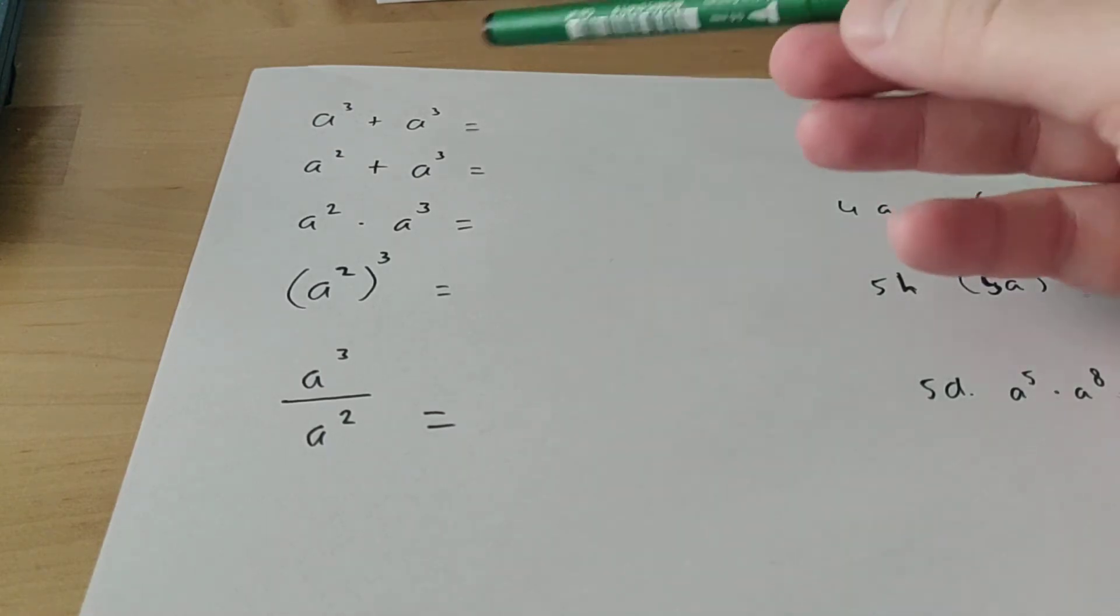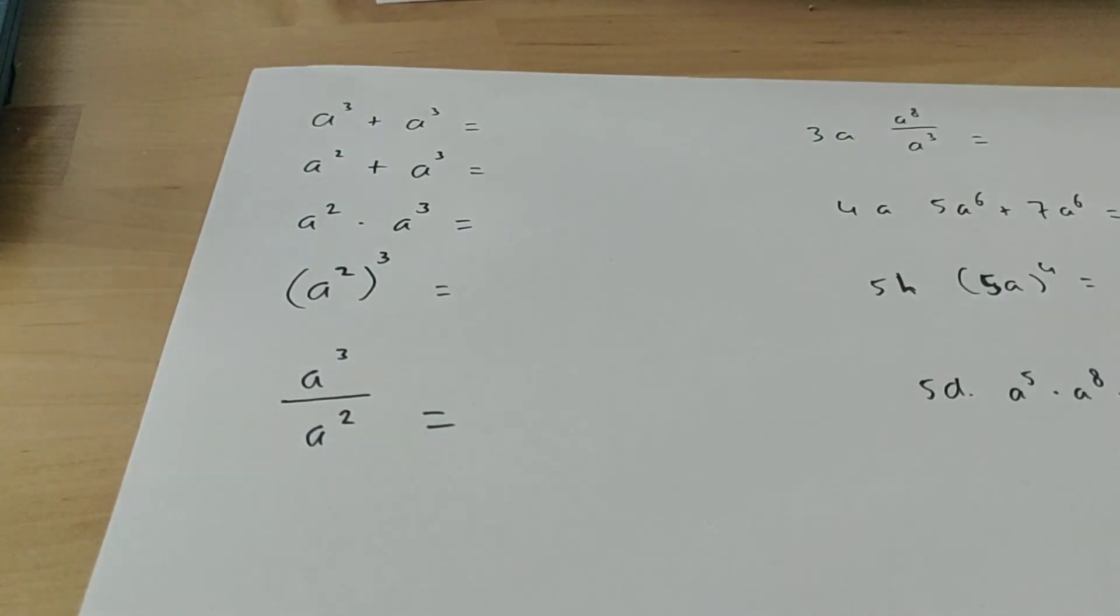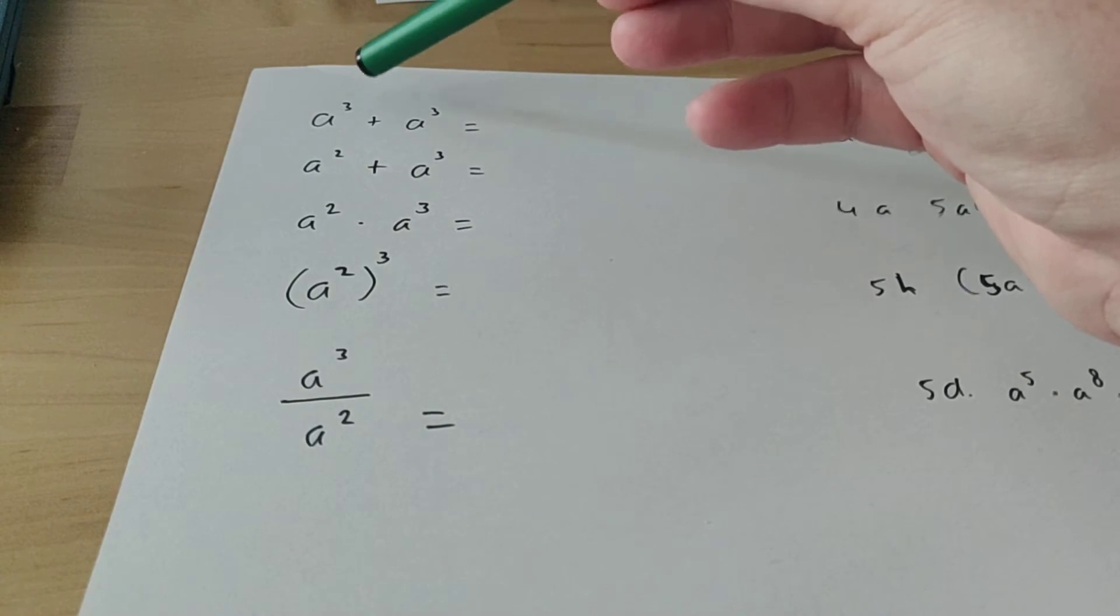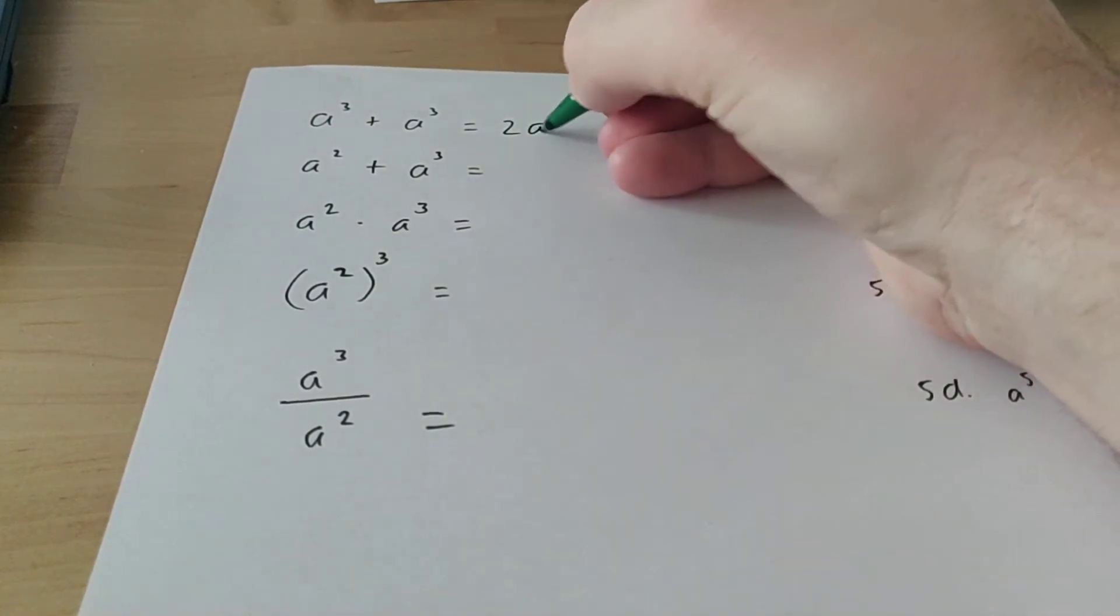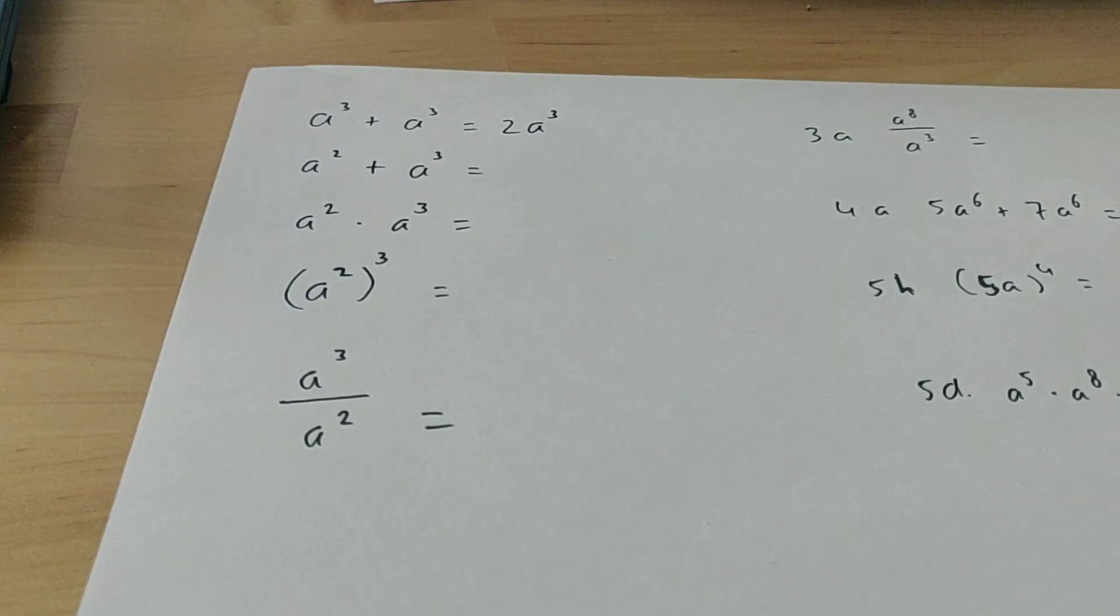Here you can see all different things that we need to do with powers and letters. So the first one, it says a to the power of 3 plus a to the power of 3. Now if the powers are the same, like over here, then you can add them. So this will be 2 times a to the power of 3. Hopefully that sounds familiar.